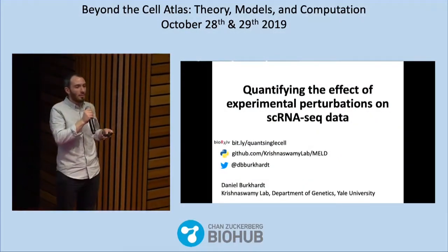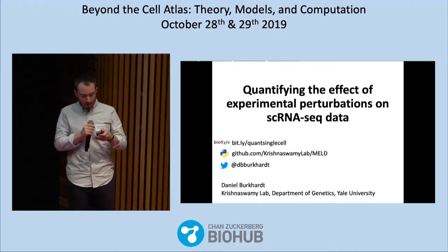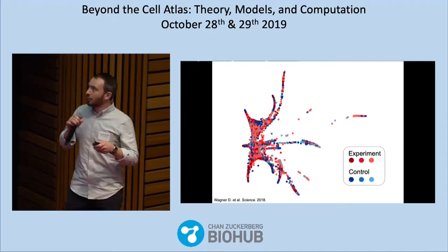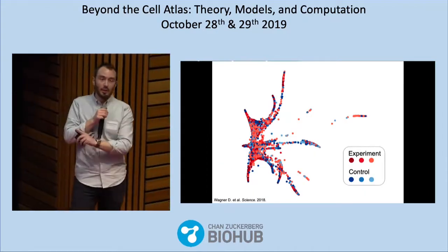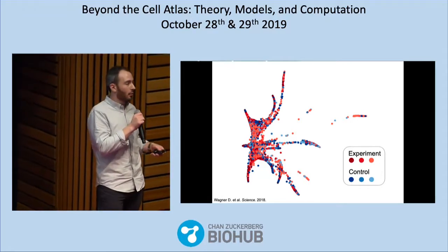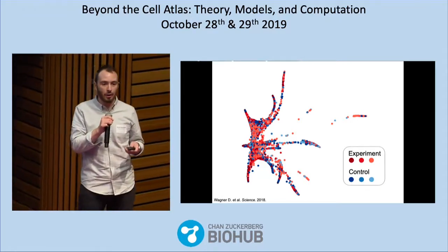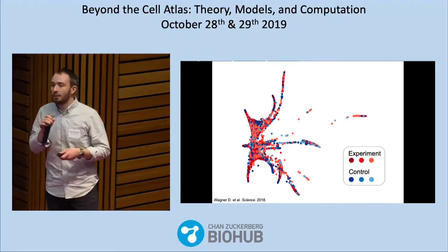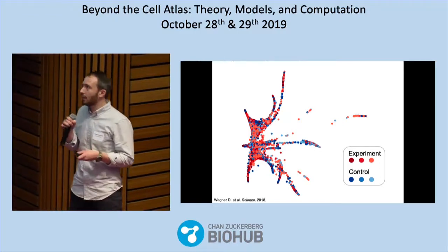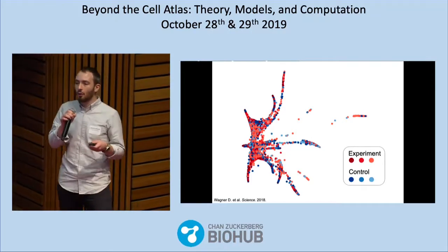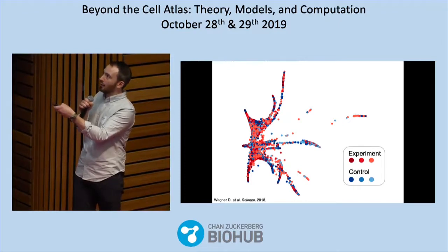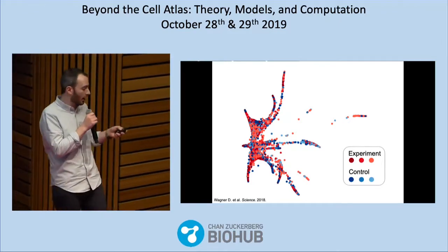My name's Dan. I'm a graduate student with Smita Krishnaswamy at Yale. Today I'm going to talk about a toolkit called MELD for compositional analysis of single-cell data. When looking at single-cell data from multiple experiments, we often see something like this: 30,000 cells from a zebrafish embryo shown in a fate plot. Half were injected with Cas9 and guide RNAs targeting a developmental patterning gene called Chordin — those are the cells in red. Cells in blue were injected with guide RNAs targeting a pigmentation gene called Tyrosinase. Throughout the plot there's a huge degree of overlap between the samples, making it entirely unclear where exactly in each branch the cell types most enriched in one sample are.